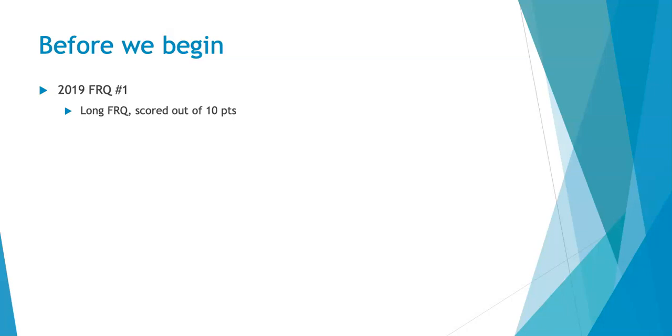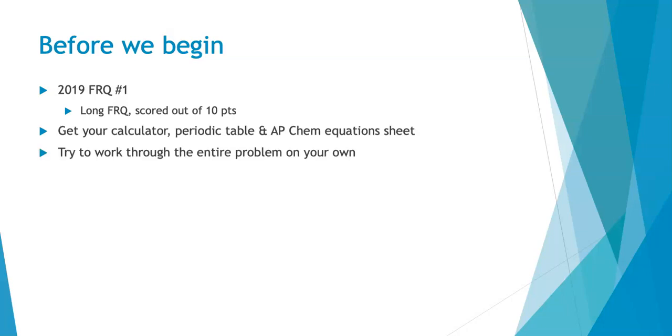This is one of the long free response questions, and it was scored out of 10 points. I always recommend that students try to work through the problem on their own before they listen to my solution. So before you get to work, make sure you have your calculator handy, your periodic table, and your formula sheet. You can work through all the parts and then listen to me, or do one section at a time. But if you really want this to be effective, you need to try it on your own first. Pay attention to how you need to enhance what you wrote down so that you get all the points. This is really how it's going to be most effective for you.